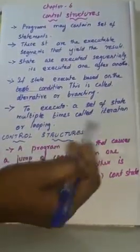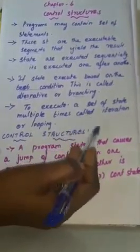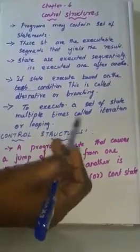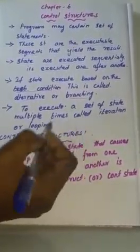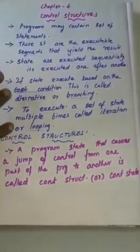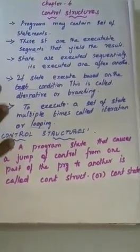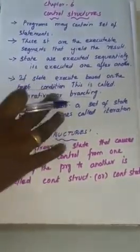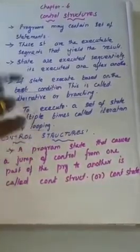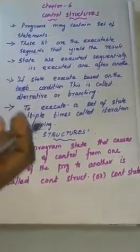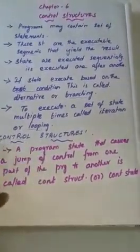What is called iteration or looping? To execute a set of statements multiple times — the same statement executed again and again, multiple times — is called iteration or looping. So these are the definitions of statements: every program must contain a set of statements; statements are executable; statements executed based on a condition are called alternative or branching statements; and statements executed multiple times are called iteration or looping.